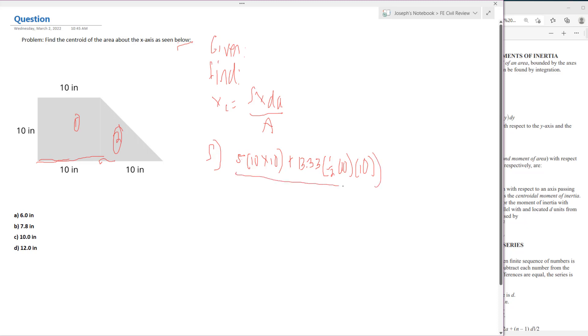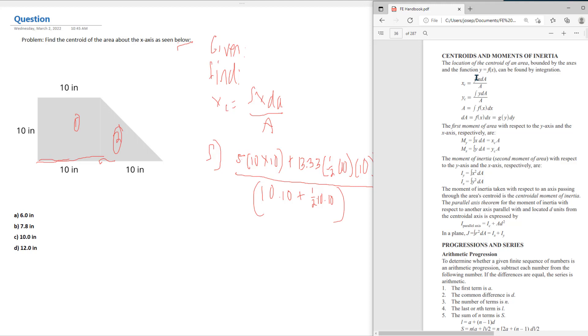The bottom part of our equation is just the area summed, so we have that 10 by 10 rectangle plus the triangle here: one-half base times height, one-half 10 times 10. Now we have everything entered in. Remember I went to this equation solving for centroid: sum of x da over a.